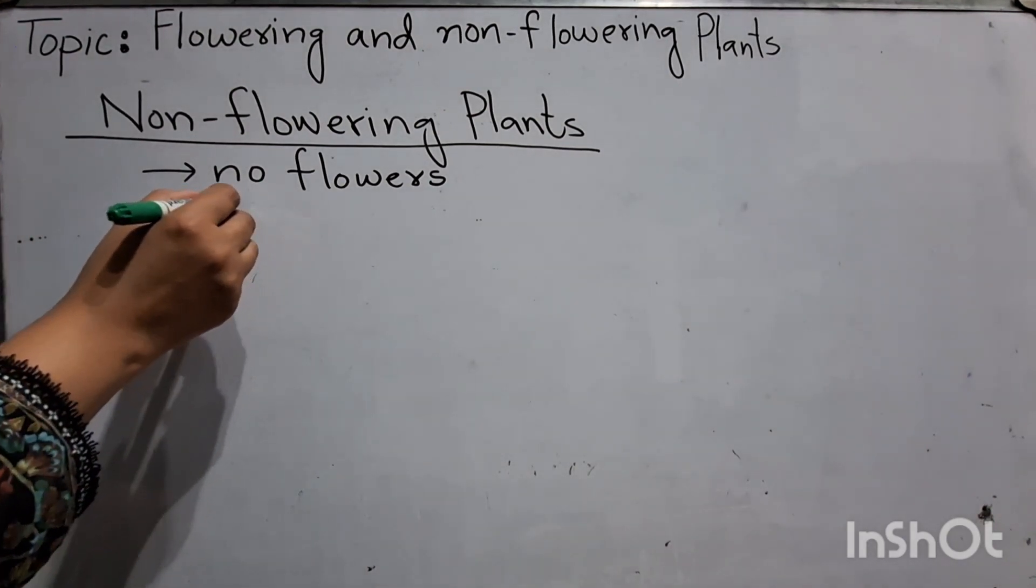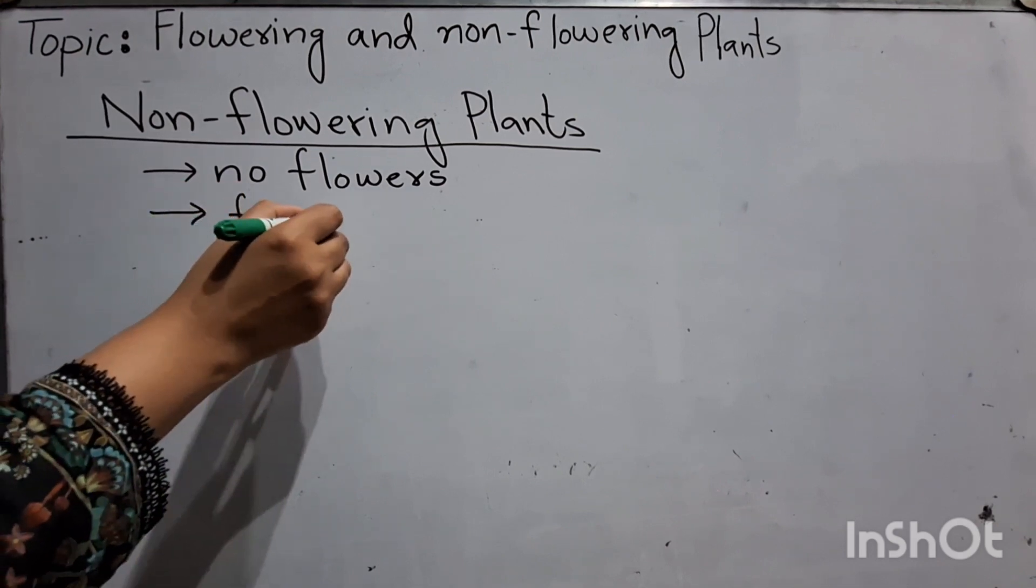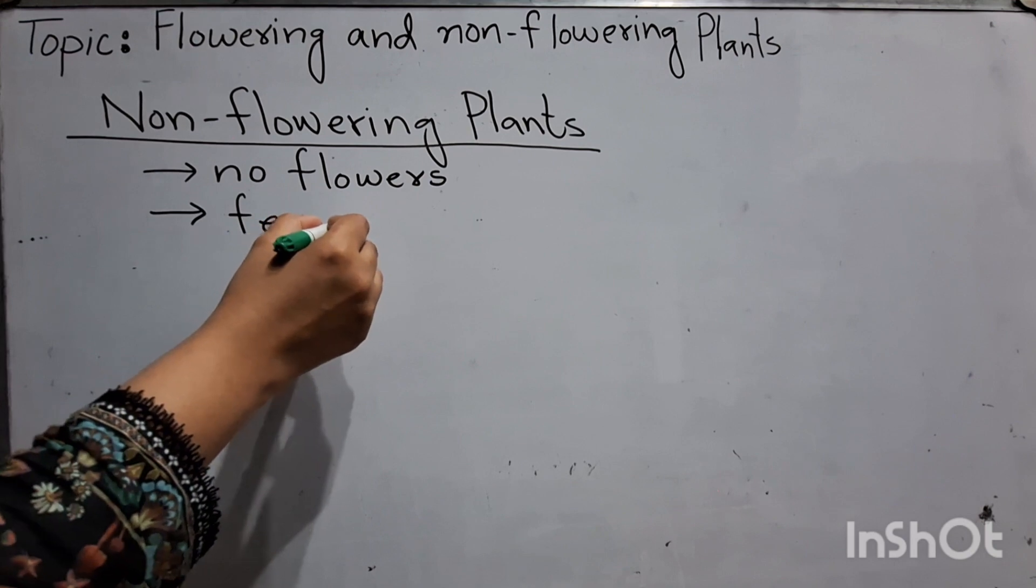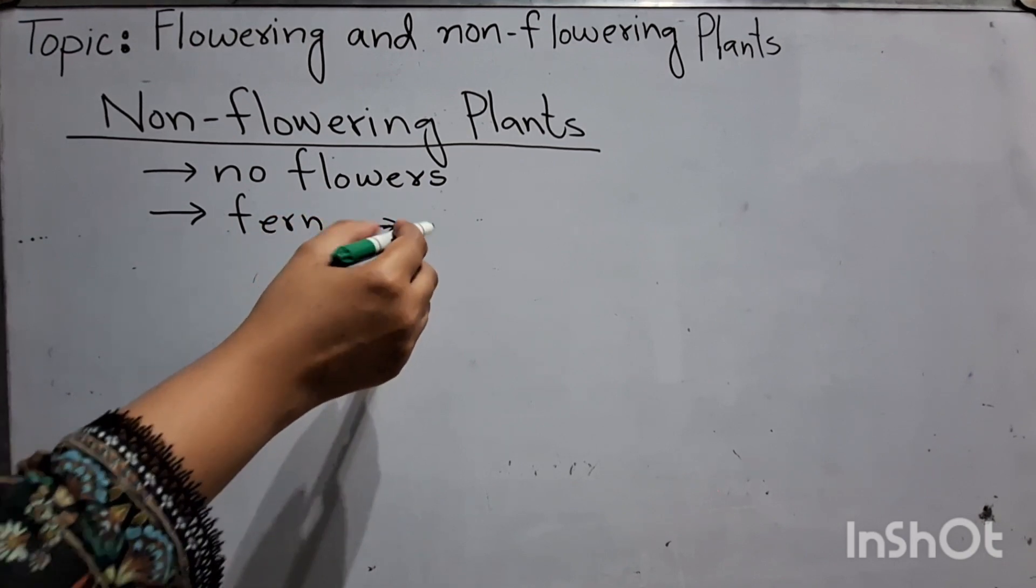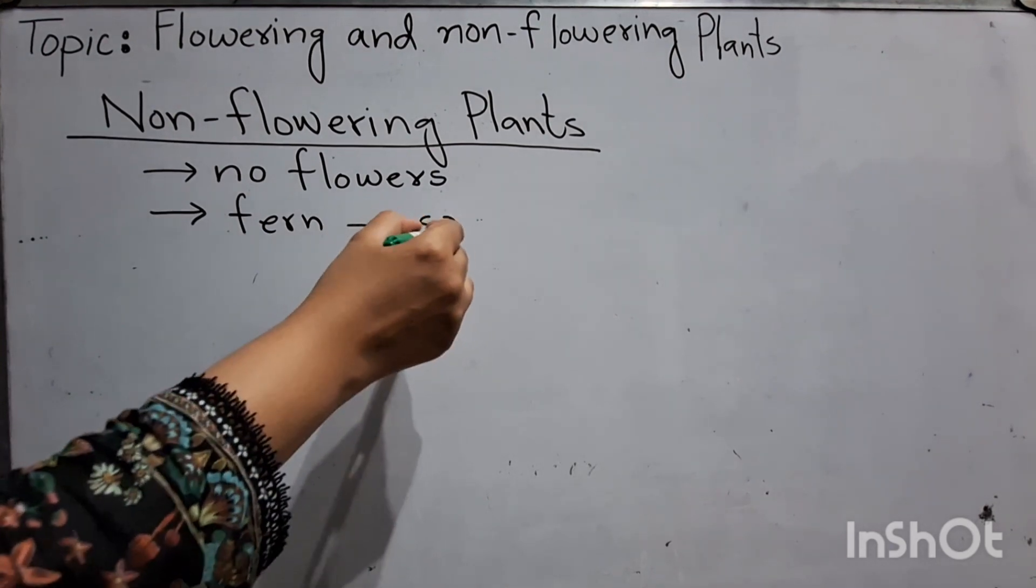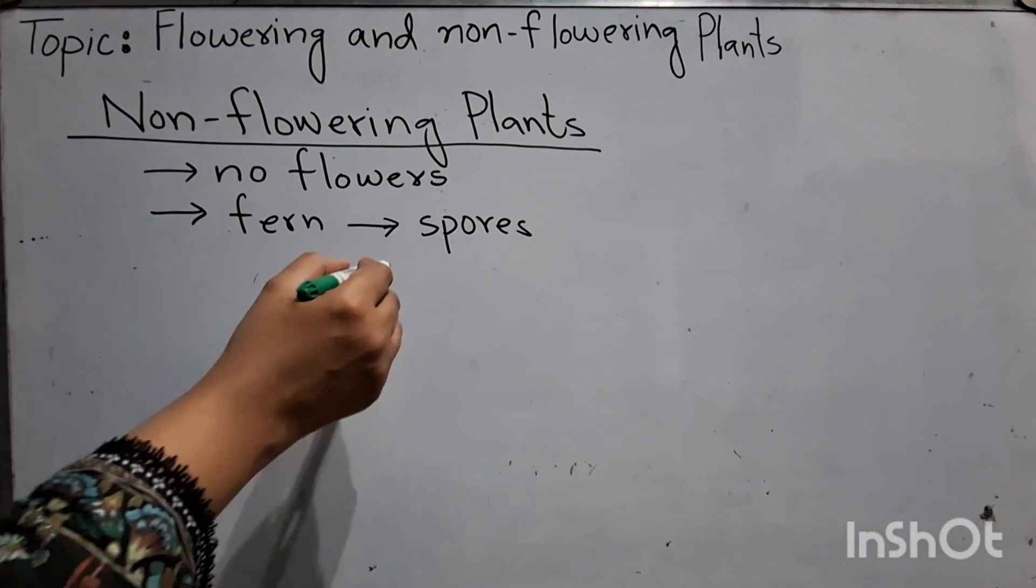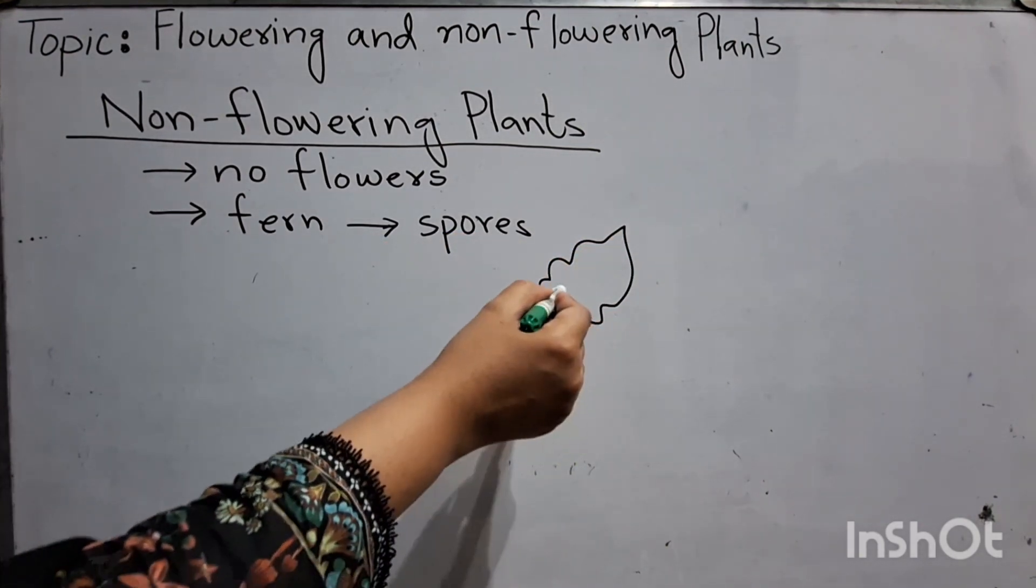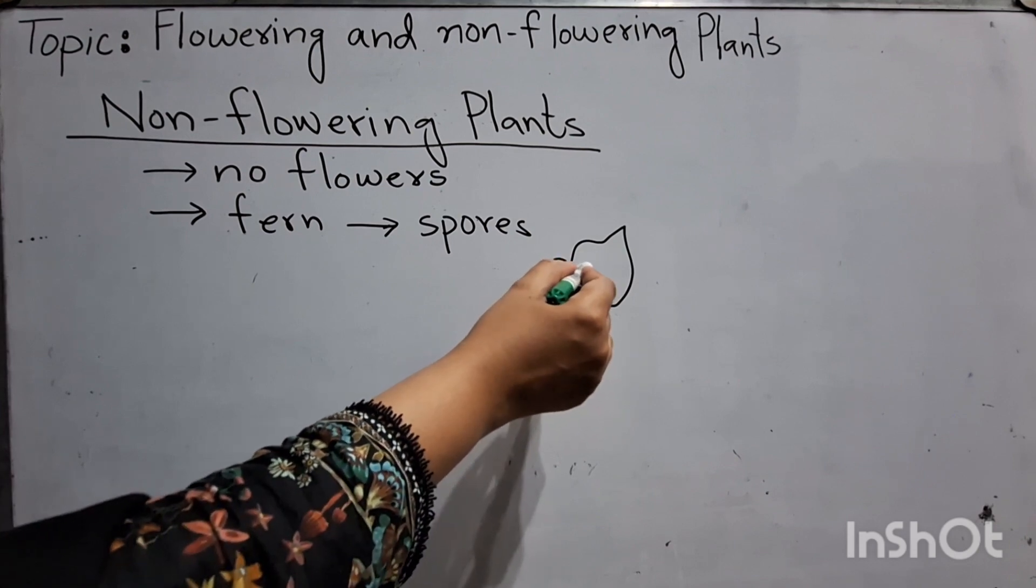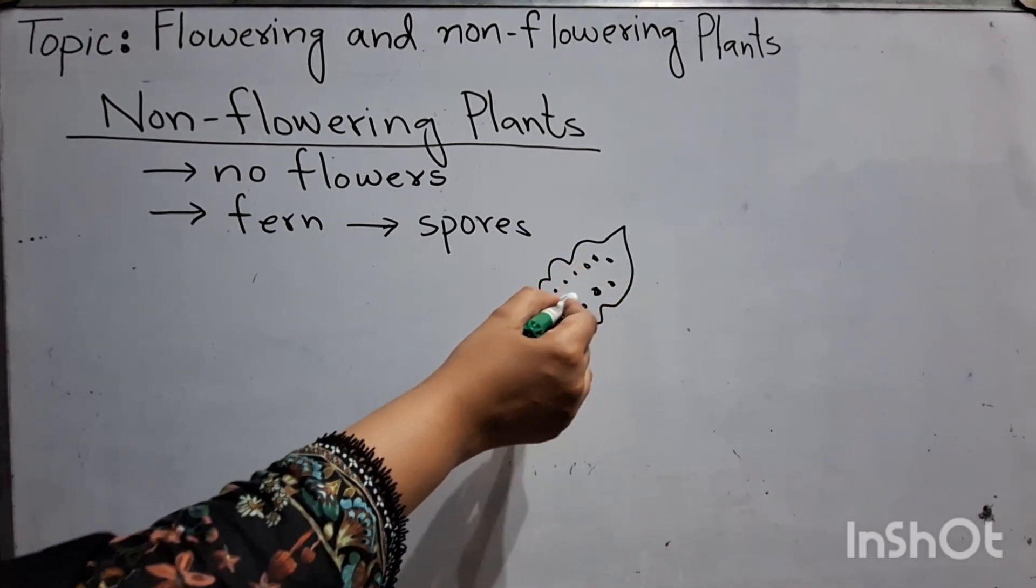Some plants like fern does not produce seed. They grow from their spores. Fern leaves have small spores in leaves.